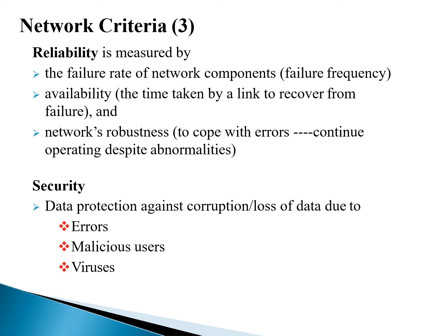The next network criterion is reliability. It is very important that a network is reliable enough to produce reliable data communication. Two factors determine reliability: the failure frequency — what is the failure rate of network components — and availability. Availability refers to how quickly, after a failure, the network can recover. The time taken by a link to recover from failure is called availability.